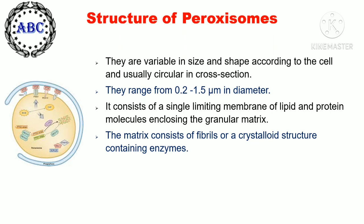Peroxisomes range from 0.2 to 1.5 microns in diameter. They consist of a single limiting membrane of lipid and protein molecules enclosing a granular matrix. The matrix consists of fibrils or crystalloid structures containing enzymes.